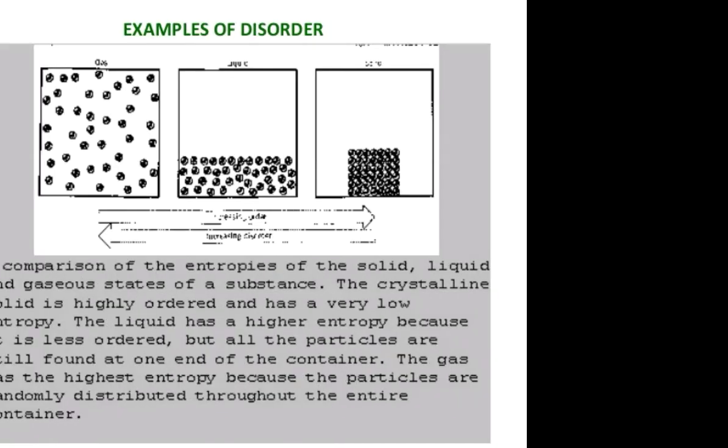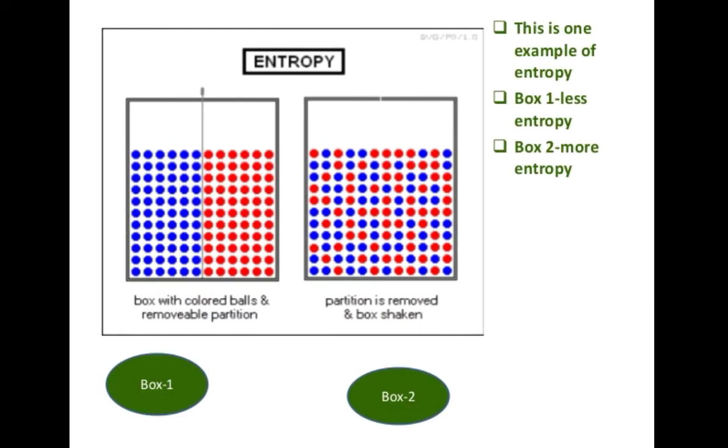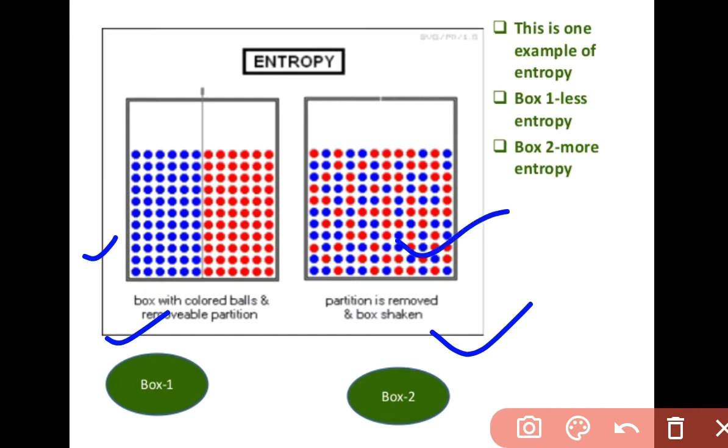This is one example of entropy showing two boxes. In box one, this shows the orderness of the atoms, so there's less entropy. In box two, there is randomness of atoms showing disorderness, and therefore entropy increases, so more entropy.